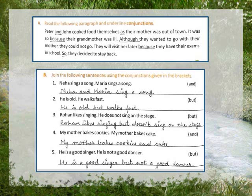Next, Exercise B: Join the following sentences using the conjunctions given in the bracket. Do sentences de rakhe hain, unhne join karna ke liye conjunctions de rakhe hain. First: Neha sings a song. Mariya sings a song. Inhne hume and se connect karna hai. So: Neha and Mariya sing a song. Ye donon hi same work kar rahe hain, to Neha and Mariya plural ho jata hai, isliye humne sing word ka use kiya hai — verb mein s add nahi kiya.